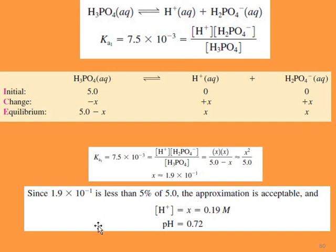Since 1.9 × 10⁻¹ is less than 5% of 5 mol/L, the approximation is acceptable. The proton concentration is 0.19 mol/L, giving pH = 0.72. Since we have three dissociation reactions each producing protons, but the first reaction produces much more proton concentration than the other two, we consider that as the dominant concentration and neglect the proton contributions from the second and third reactions.